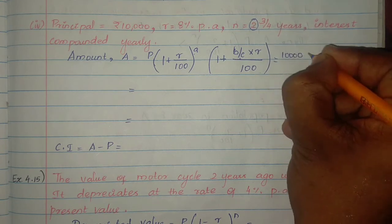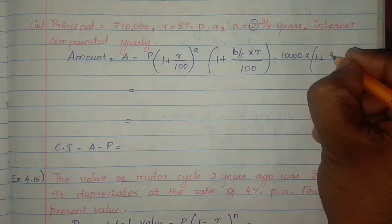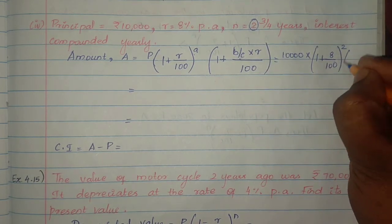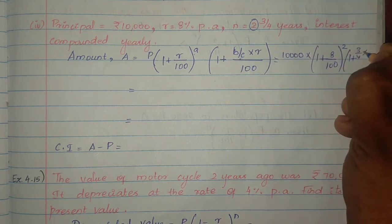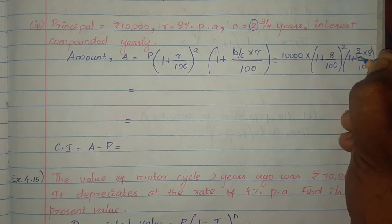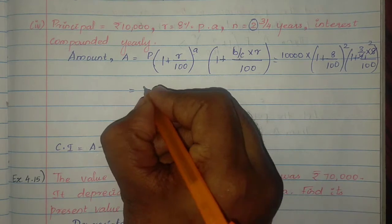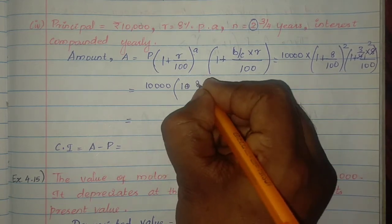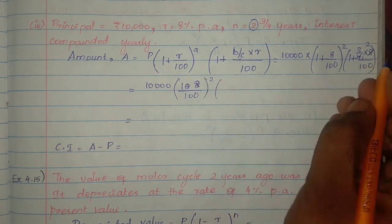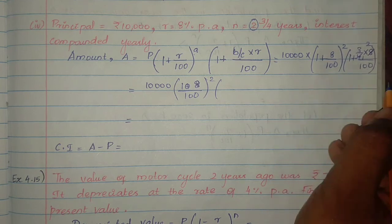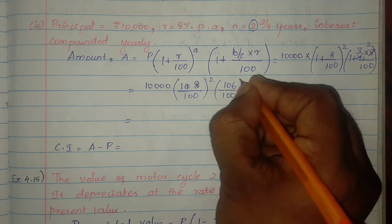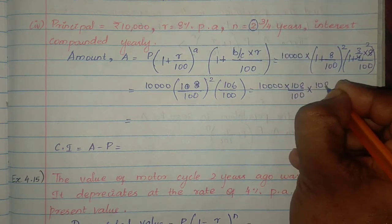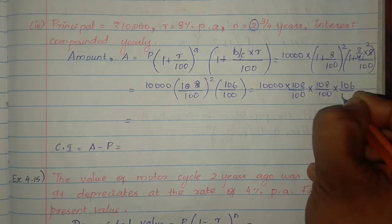Principal amount is 10,000. Into (1 + 8/100) whole power 2, times (1 + 3/4 × 8/100). The 4 and 8 cancel giving 2, so B/C × R/100 = 3×2/100 = 6/100. This gives 10,000 × (108/100)² × (106/100).